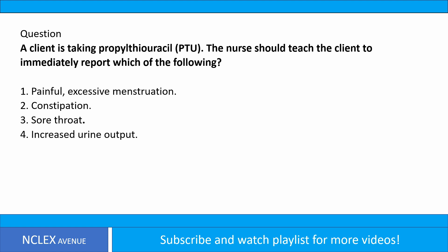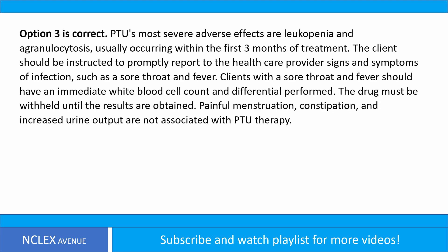Answer. Option 3 is correct. PTU's most severe adverse effects are leukopenia and agranulocytosis, usually occurring within the first three months of treatment. The client should be instructed to promptly report signs and symptoms of infection, such as a sore throat and fever. Clients with a sore throat and fever should have an immediate white blood cell count and differential performed, and the drug must be held until the results are obtained. Painful menstruation, constipation, and increased urine output are not associated with PTU therapy.